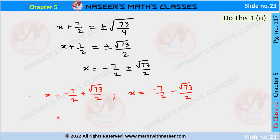So the two solutions are x = -7/2 + √73/2 and x = -7/2 - √73/2.